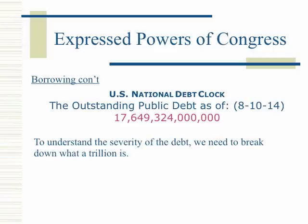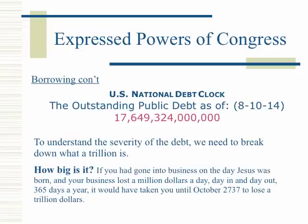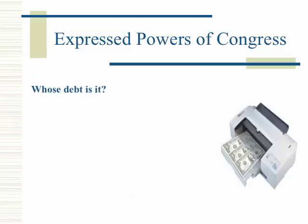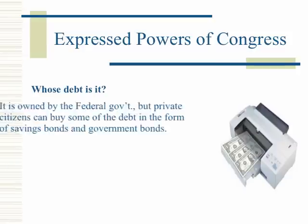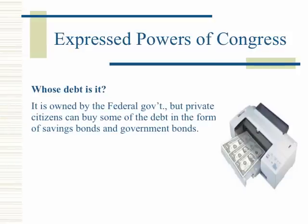To understand the severity of the debt, we need to break down what a trillion is. If you had gone into business on the day Jesus was born and your business lost a million dollars a day, 365 days a year, it would have taken you until October 2737 to lose a trillion dollars. The debt is owned by the federal government, but private citizens can buy some of it in the form of savings bonds and government bonds.